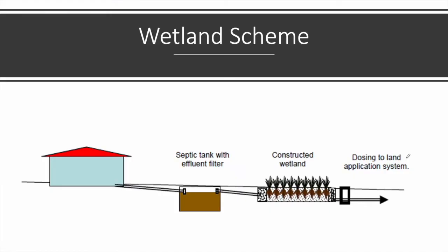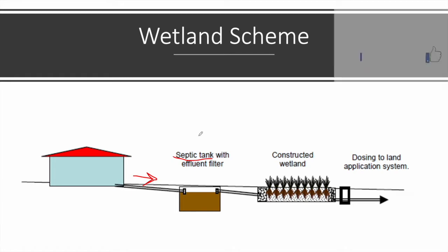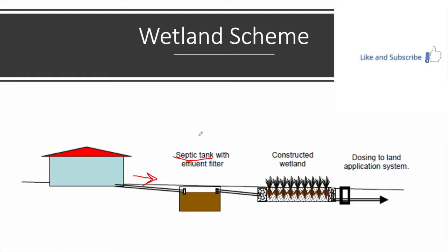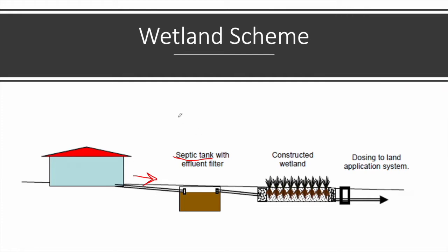Now let's see a typical wetland scheme. A household generates domestic wastewater which flows into a primary treatment tank — in this case a septic tank. For bigger scale projects you can use an ABR system, and for larger scale projects a large sedimentation tank.